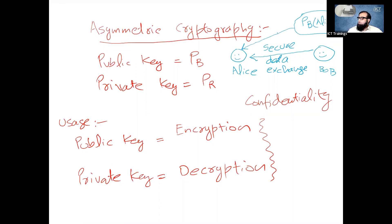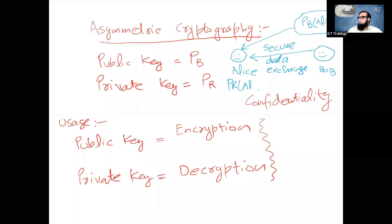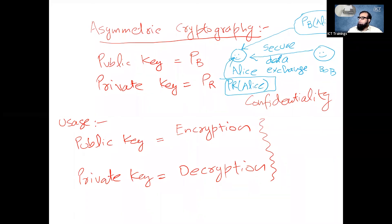Jab Bob ke paas Alice ki public key hogi to ye usse data encrypt karke Alice ko send kar dega. Aur us data ko decrypt Alice ne apni private key ke saath karna hai. Aur private key kabhi bhi Alice ne kisi ke saath bhi share nahi karni. Lehaza if Bob has the public key of Alice, Bob can encrypt data using public key of Alice and send it to Alice with the confidence that nobody else called man in the middle.